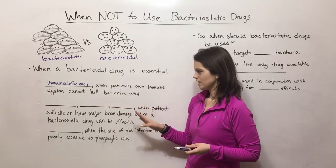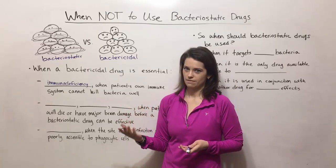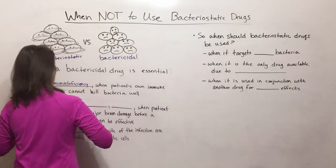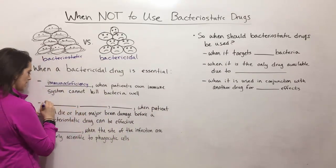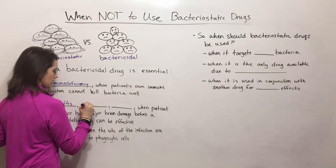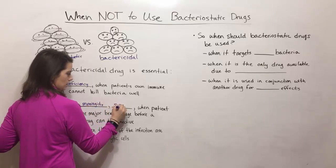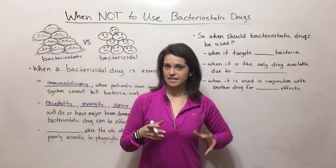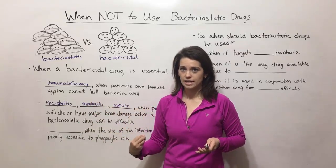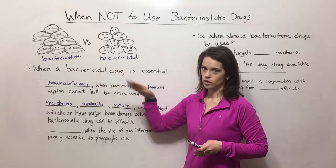There are also cases when a patient would die or have major brain damage before a bacteriostatic drug can be effective — basically if the infection is too severe. Think about things like encephalitis, meningitis, and cases of sepsis. These are all very serious types of infections where a bacteriostatic drug just can't work quickly enough to save the patient's life, which is why a bactericidal drug would be required in those cases.